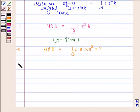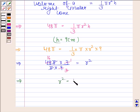Now this implies 48π × 3 / (π × 9) = r². Cancel π from both numerator and denominator. On canceling 3 by 9, we get 1/3, and on canceling 48 by 3, we get 16. So r² = 16, which implies r = 4 cm.